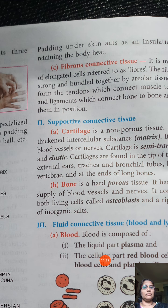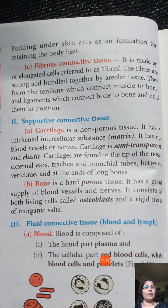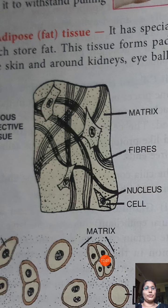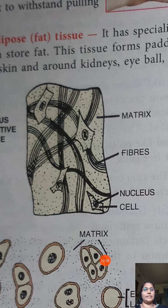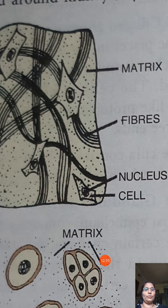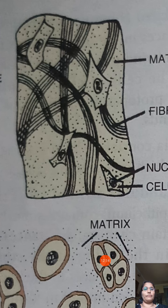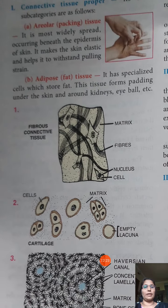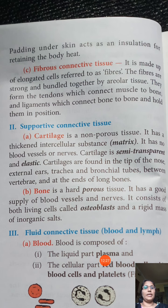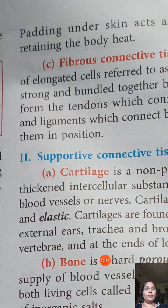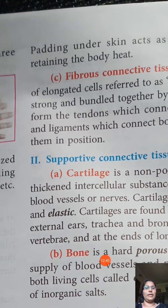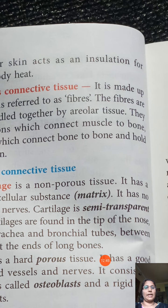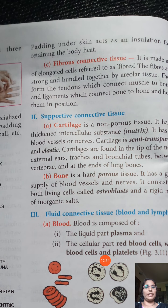Fibrous connective tissue has a lot of matrix with intercellular spaces, nuclei, cells, and elastic fibers. It is found in tendons, which connect muscles to bones, and in ligaments between vertebrae, which connect bone to bone or bone to muscle.